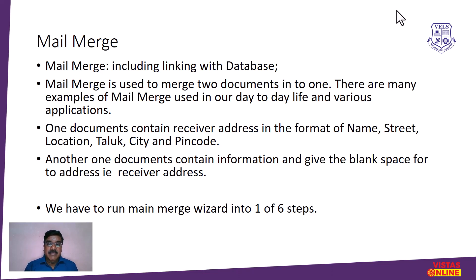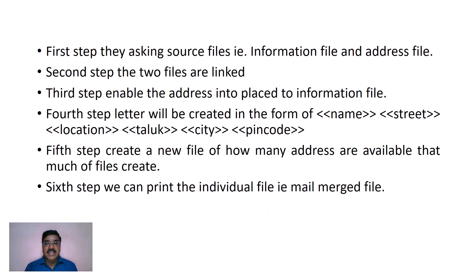The fourth step is where mail merge starts. The fifth step merges all data values into one document. The sixth step displays the created document. To summarize: step one asks for the source/information file; step two links the two files; step three places the address into the information file; step four creates the letter printed with name, street, location, taluk, city, and pin code; step five creates a new file for each address; step six allows printing of individual merged files.